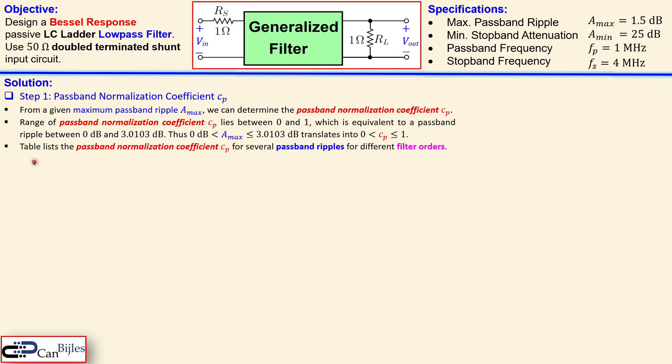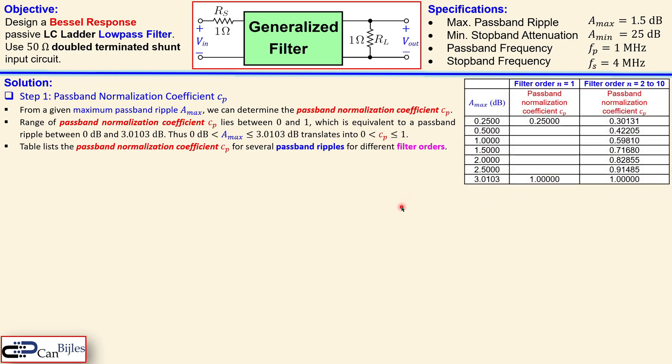Then we need to use a table which will list this coefficient which is the passband normalization coefficient for several passband ripples and for the filter orders. That's shown here actually. You can see that here in this a_max column which is our 1.5 you can see that here. That is related to this value which is then 0.71680.